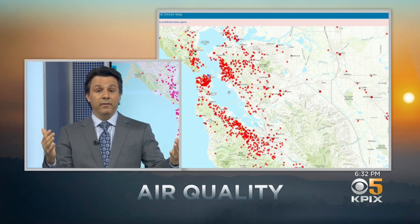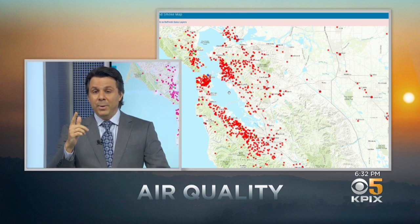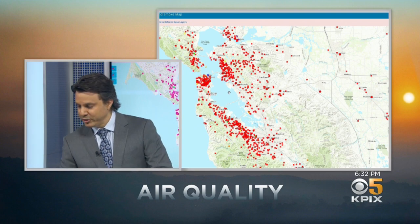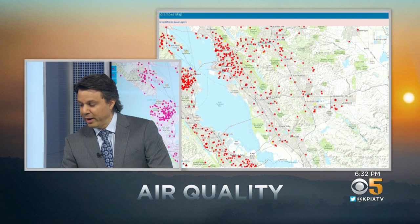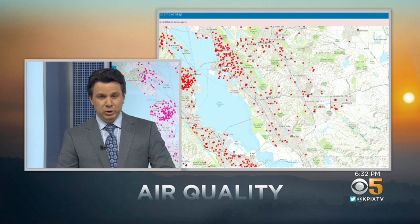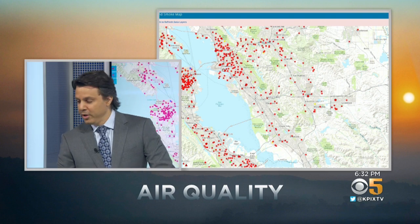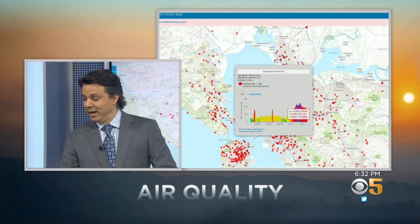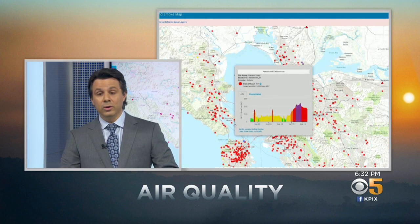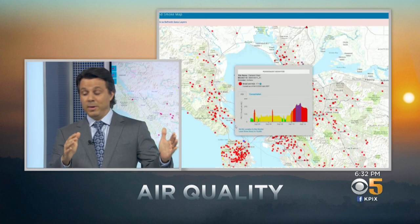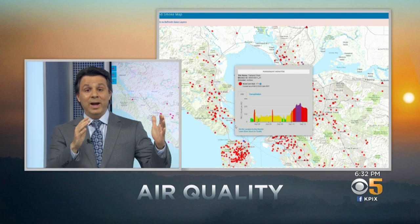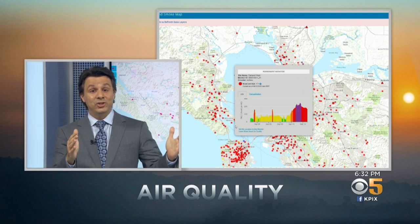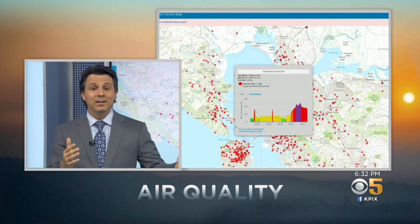Red, as we've learned, is unhealthy air. With this site, when you look at the sensors, ideally you want to look for the round dots — those are the official of the officials. When you click on a round dot, you actually get a little historical record going back over the last four days, and it shows you how the air quality has changed so you can at least know where it's been.